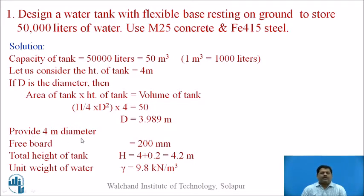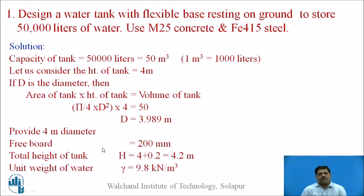We provide 4 metres diameter as a round figure value. A freeboard of 200 mm is provided to accommodate vapour pressure and to leave some space above the water level. The total height of the tank is 4 m + 0.2 m freeboard = 4.2 m. Note that in capacity calculation the freeboard height is not considered. The unit weight of water is taken as 9.8 kN/m³.